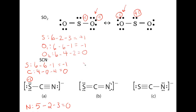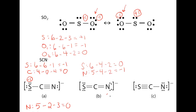For Structure 2 of SCN⁻: S starts off with six valence electrons, has four dots and two dashes, giving it a formal charge of zero. Carbon is zero in all structures (zero dots and four dashes), so we can skip that. N starts off with five valence electrons, has four dots and two dashes, giving it a formal charge of negative one, which I'll mark on the structure.